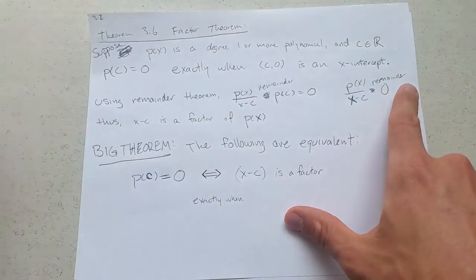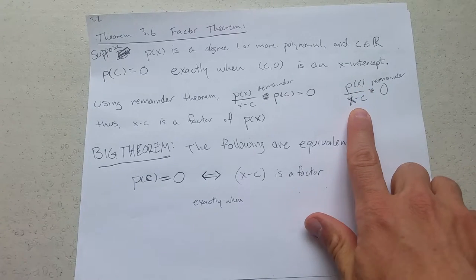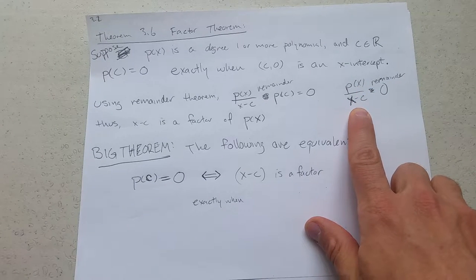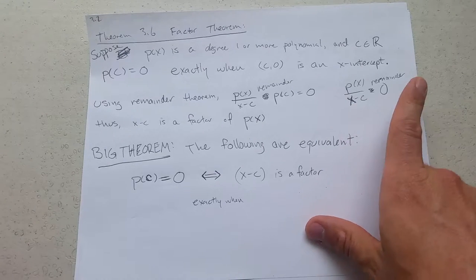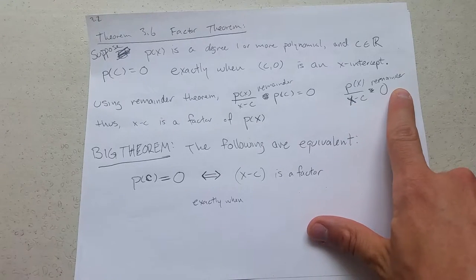So when do you get remainder zero? When this division works out perfectly. You're going to see this. Hopefully our division will work out perfectly. And that's going to be our check. We should get a remainder zero. So remainder zero is gonna be a big deal.